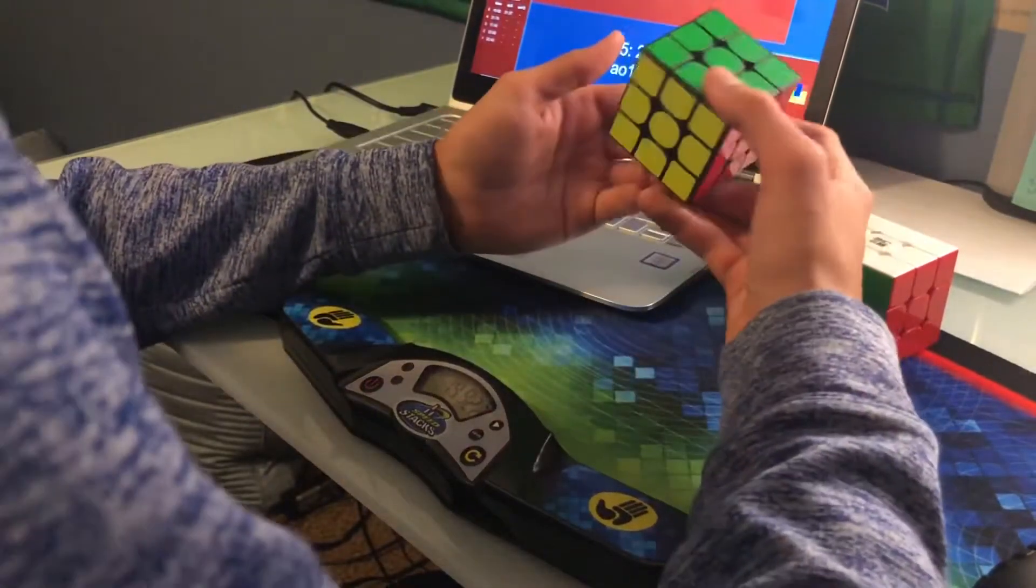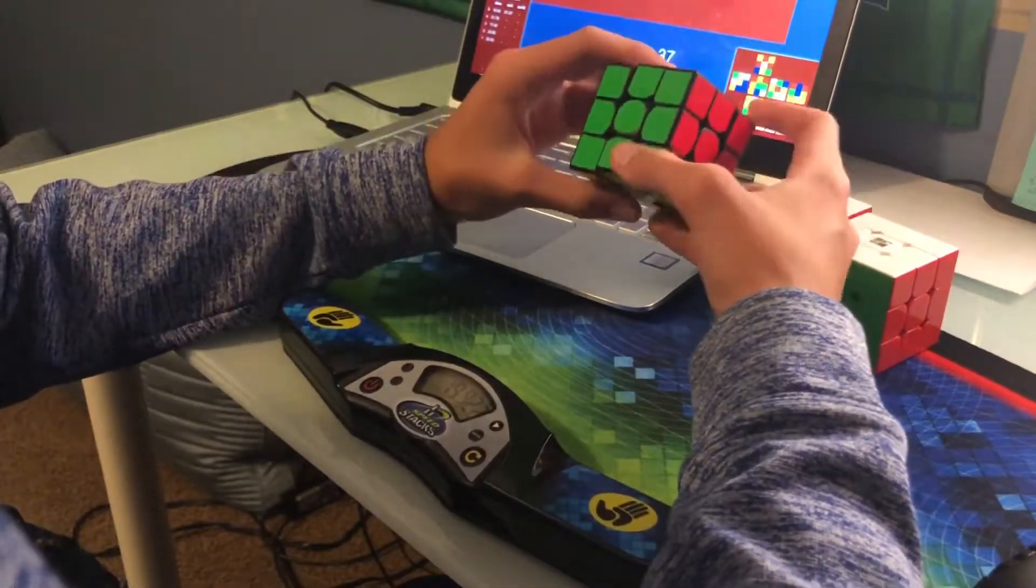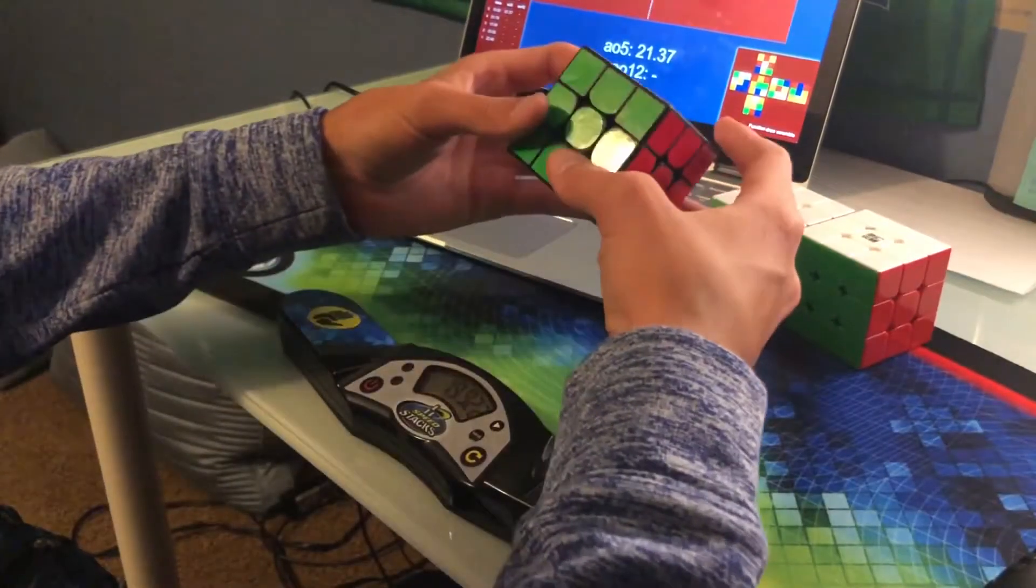Alrighty, so for the Yushin Little Magic $5 3x3, interesting results. This one was significantly worse than these two cubes. That was an average of 5 of 21.37.